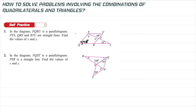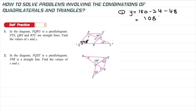PQS is a triangle. To find Y: Y = 180 − 24 − 48 = 108 degrees.